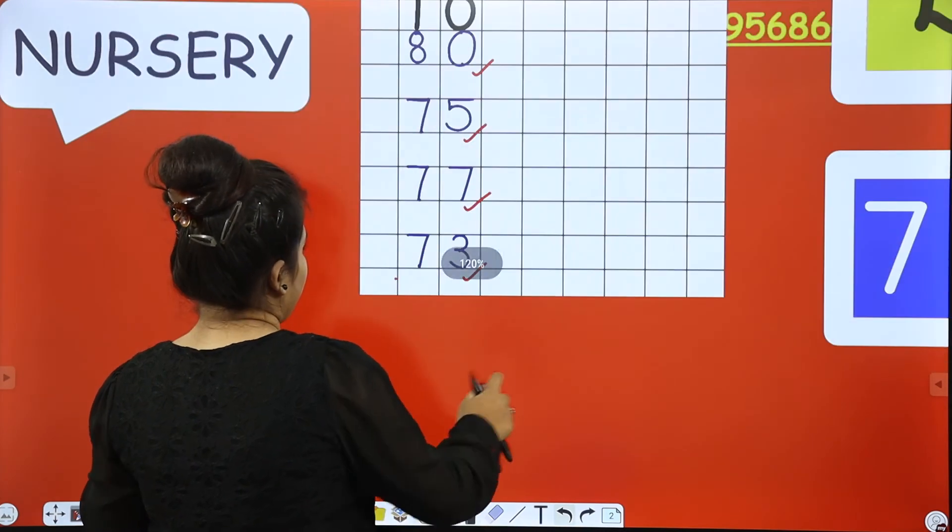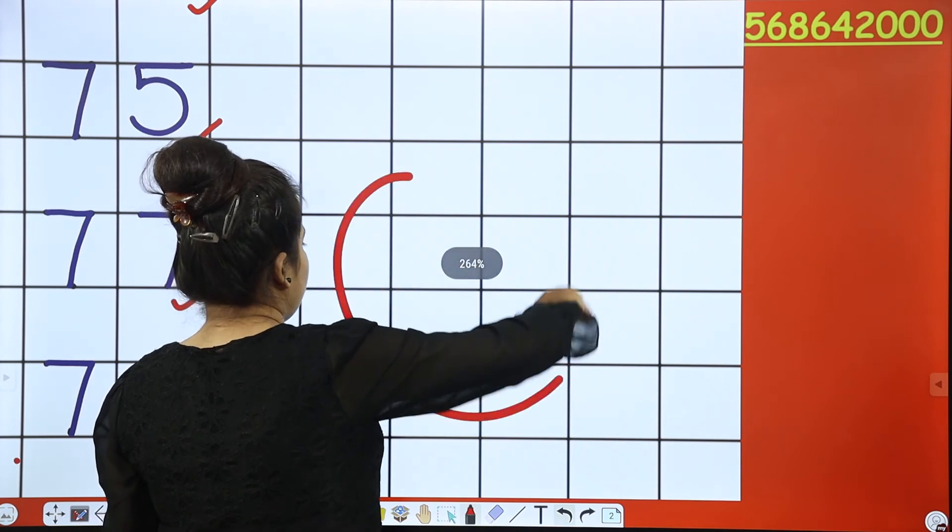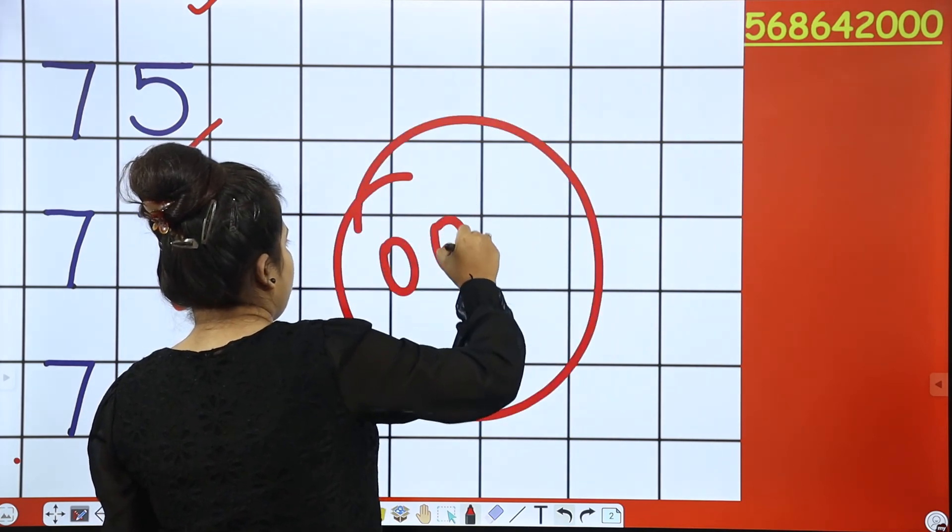73, 73, check. All of them are correct, very good. So give a big smiley, mama will give.